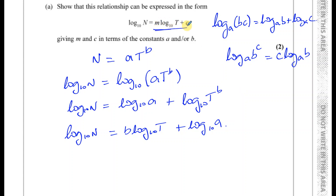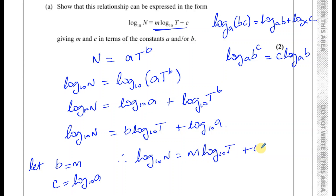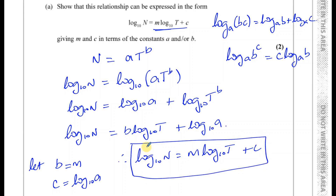To match exactly the required form, we let b equal m and let c equal log base 10 of a. Remember, a and b are constants, so those are the constants m and c. Therefore we can write: log base 10 of n equals m times log base 10 of t plus c. That's what we were required to show, so that's part a done.